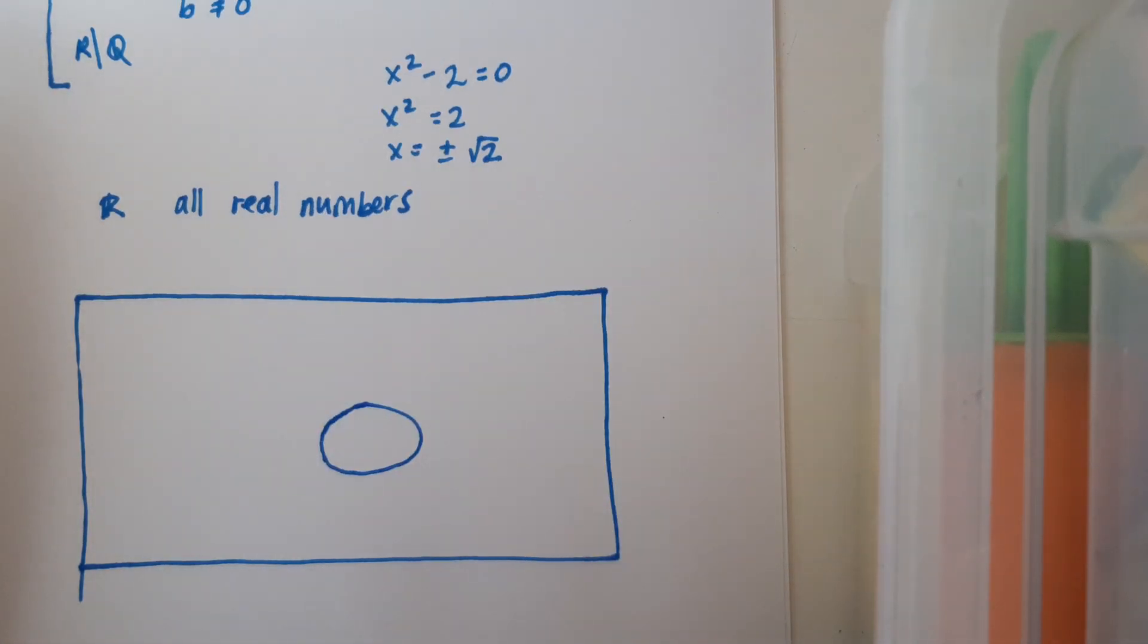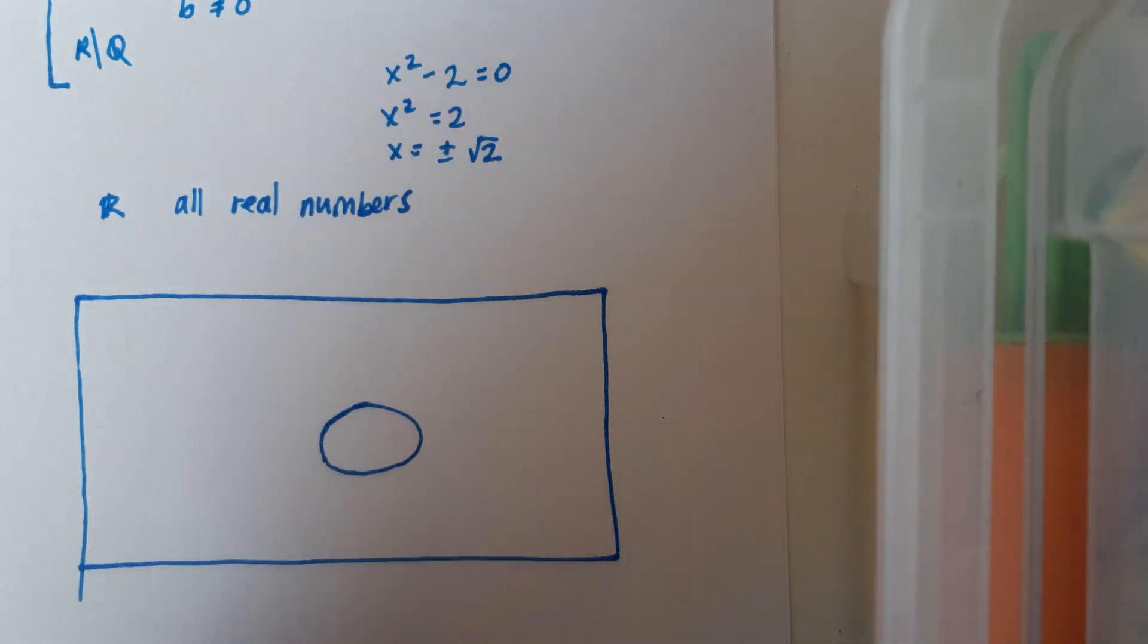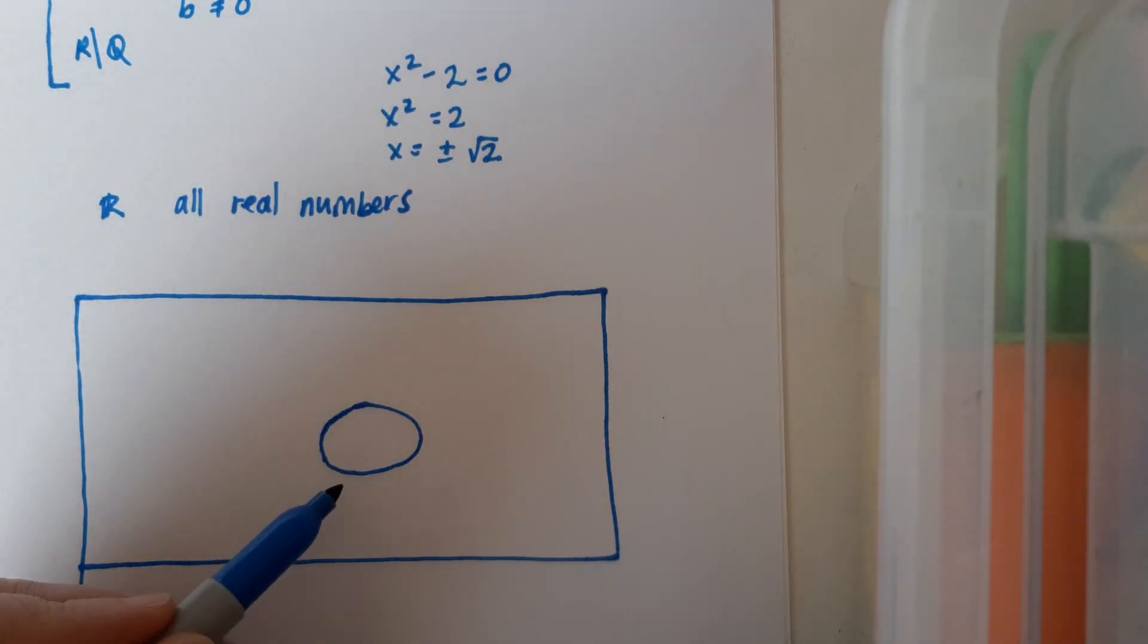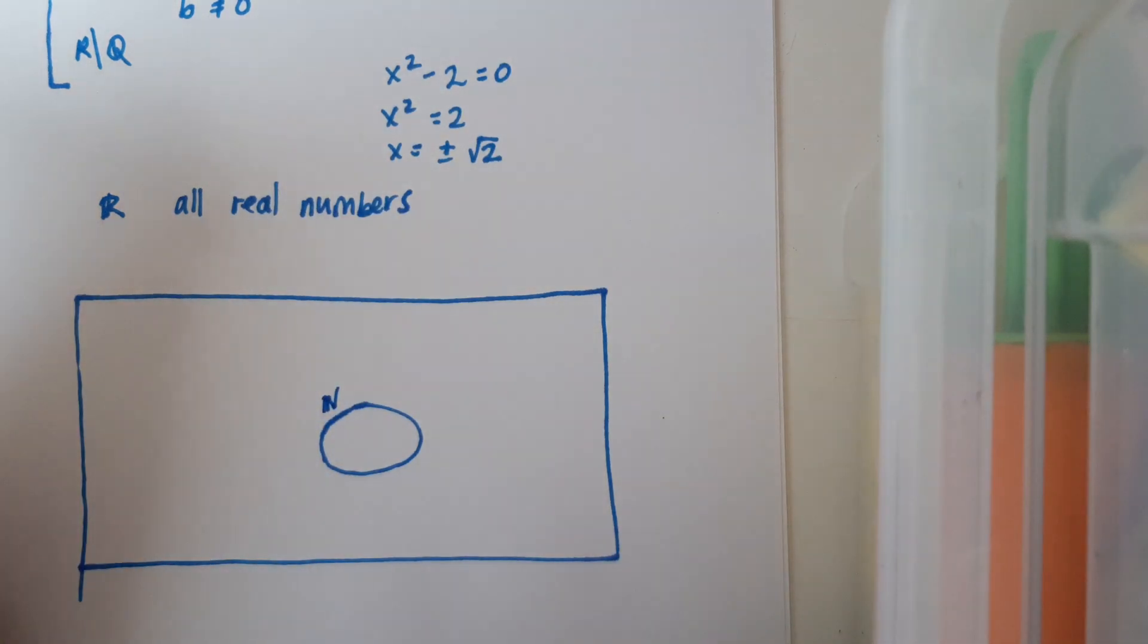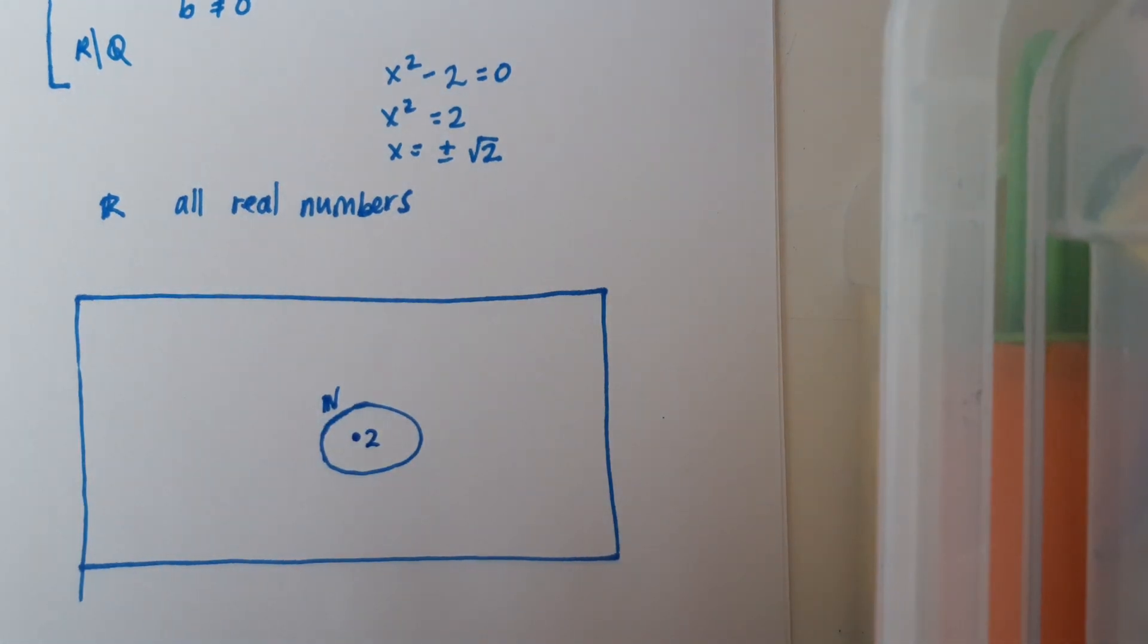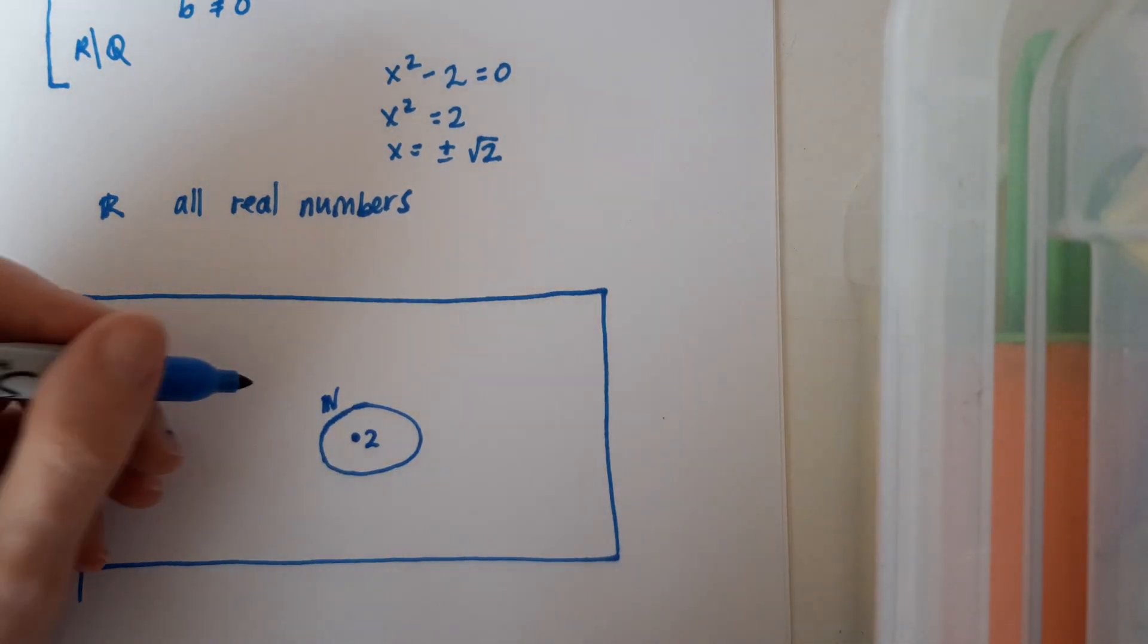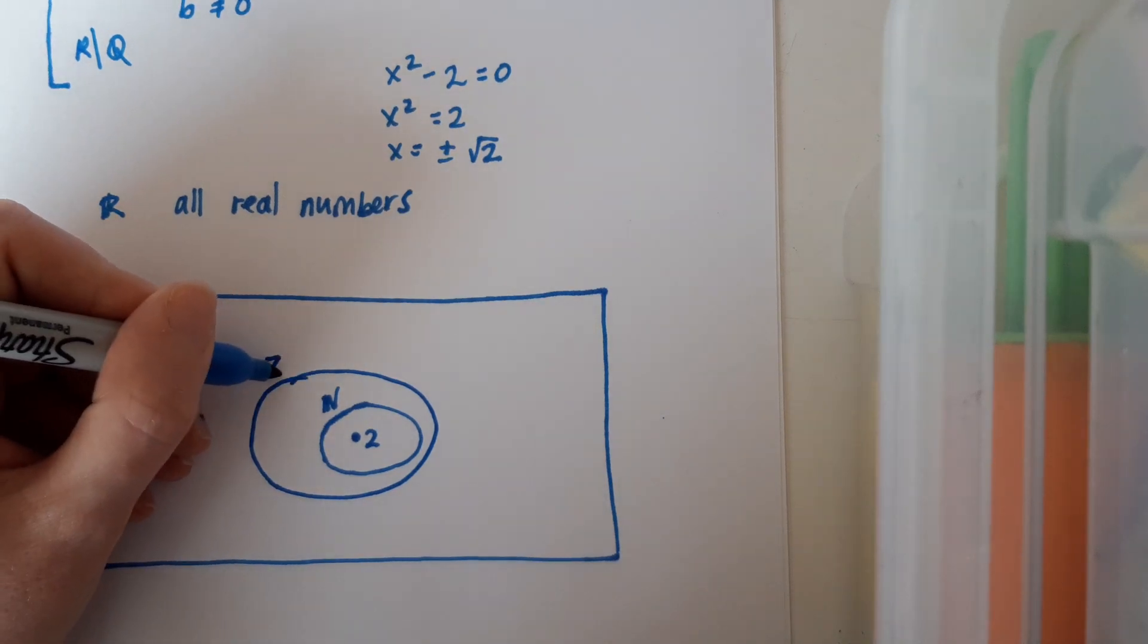So if we visualize how this would look as a Venn diagram, imagine that we've got all the numbers that exist. And within that we start off with the natural number set, so the natural number set would include, for example, the numbers 2 and 1 and so on. I'm going to stick in my 2 for my solutions from earlier. But obviously there's an infinite number of elements inside that set.